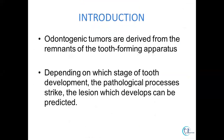Starting with the introduction, odontogenic tumours are derived from the remnants of the tooth-forming apparatus. These are tumours which have their origin from the apparatus which forms the tooth. Depending on the stage of tooth development — either cap stage, bell stage, or bud stage — the pathological process will strike, and the lesion can be predicted to belong to a specific stage of the odontogenic apparatus.